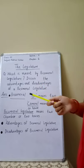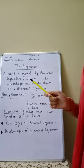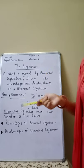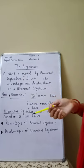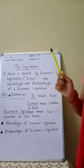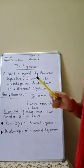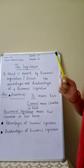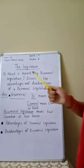Second point: creation of deadlocks. If there are two houses, they may fight for supremacy. In such cases, legislation is delayed if the two houses are dominated by two different political parties, resulting in frequent conflict and deadlocks.